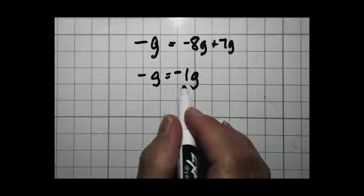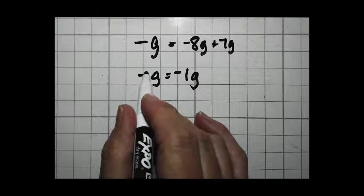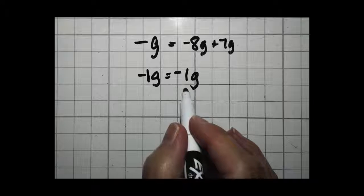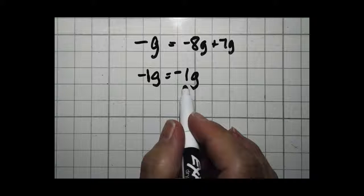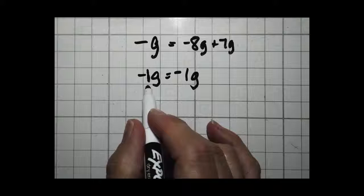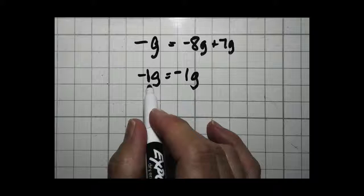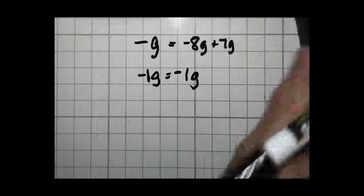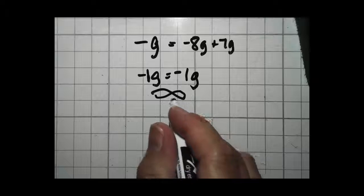Now, this looks different, negative g and negative 1g. But remember, we're basically lazy and there is a 1 written right there. We just don't write it. It's not necessary. Everybody knows the 1 is there. But when you put the 1 there, suddenly you realize it is an identity solution. Negative 1g equals negative 1g. This one is infinity or an identity solution.